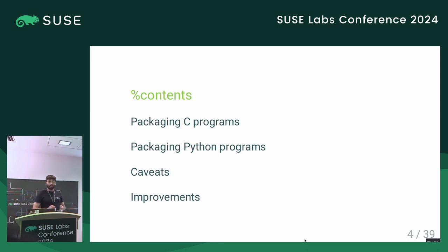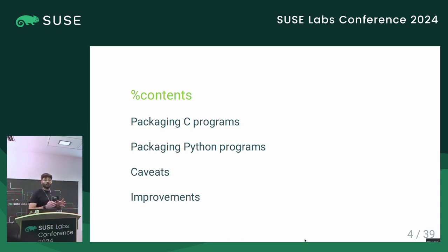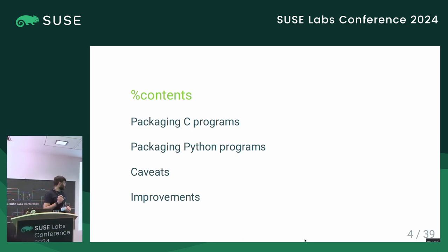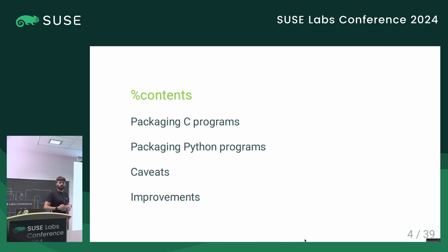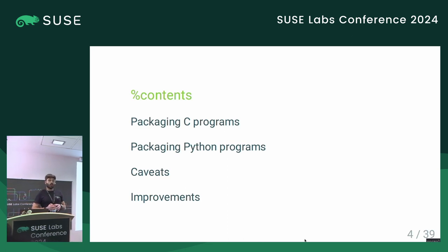What are we going to talk about today? We are going to see two packages — one is a C program, the other is a Python program — and compare the RPM spec file with approaches from a couple of other distributions. Afterwards we will see the differences and caveats of the various approaches, including the caveats of using macros. At the end we'll also see if there is any room for improvements for OpenSUSE and for packaging in general.